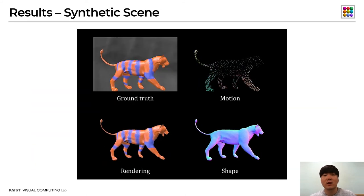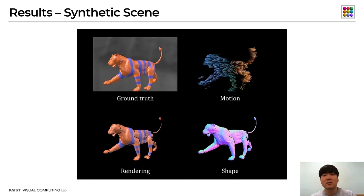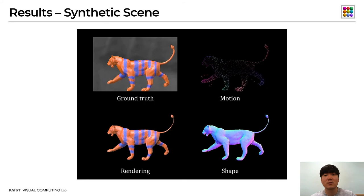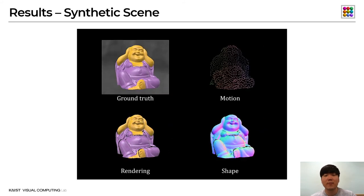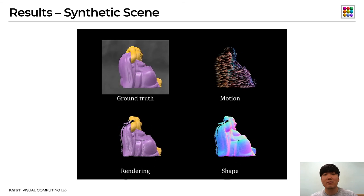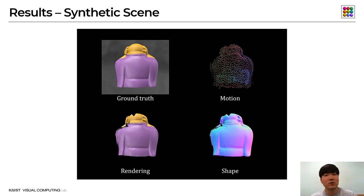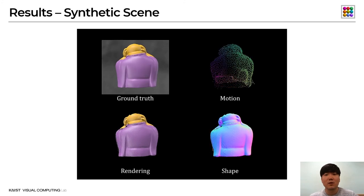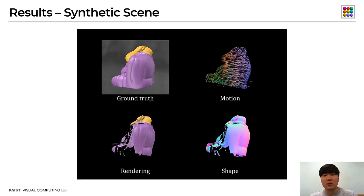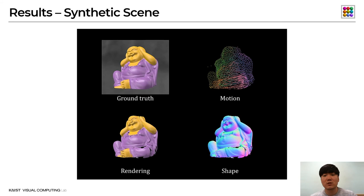We demonstrate results on synthetically generated scenes. We applied synthetic deformation to the ground truth mesh and rendered to obtain color images. We added Gaussian random noise to generate realistic IR and depth images. The estimated synthetic motion results using our method are shown, and with the estimated motion, our method reconstructs appearance and shape successfully.